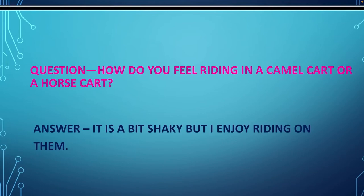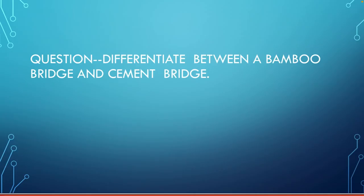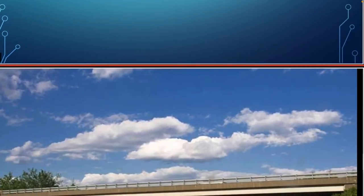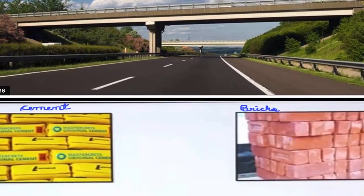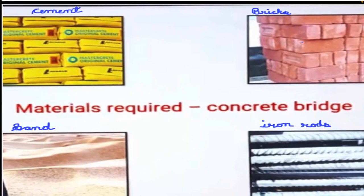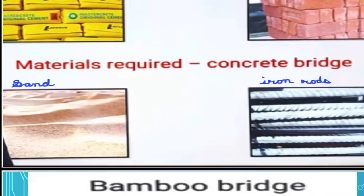Next question: Differentiate between a bamboo bridge and a cement bridge. This is a cement bridge — a strong bridge that can take the weight of all kinds of land transport. It is made of cement, iron rods, and bricks.